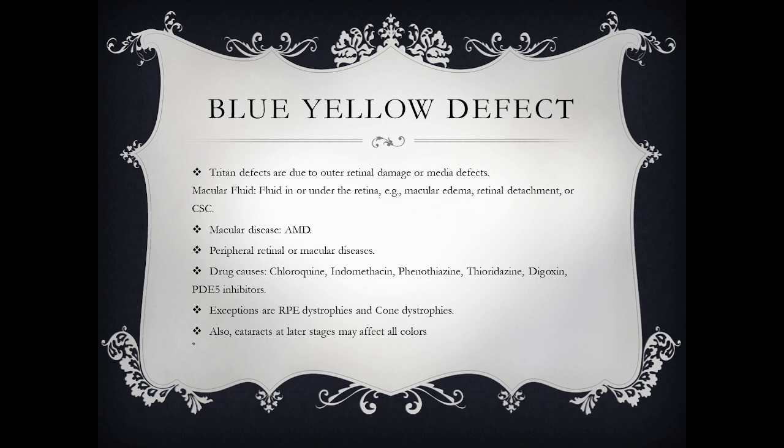Macular diseases causing blue-yellow defects include age-related macular degeneration, peripheral retinal and macular disease. Many drugs that cause damage to the retina or macula include chloroquine, indomethacin, phenothiazine, thioridazine, digoxin, and phosphodiesterase-5 inhibitors.